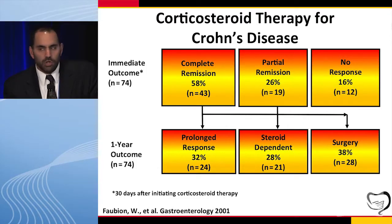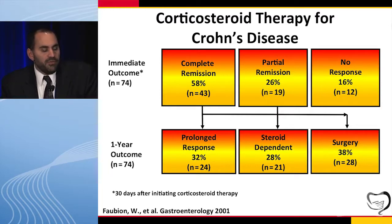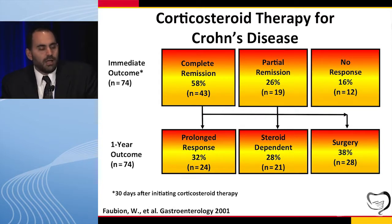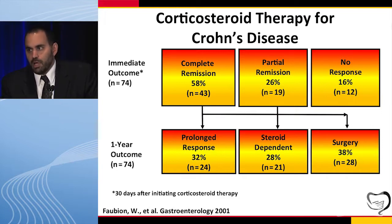The results are worse with Crohn's disease. Short-term responses are still pretty good, with 58% in complete remission and 26% in partial remission. But if you look at one-year outcomes after that first course of steroids, only a third of patients have a prolonged response off steroids, about a third are steroid-dependent, and about a third or more have undergone surgery. So when you write that first prednisone prescription, I think it's a marker that adverse outcomes are coming in the next year for your patients with Crohn's.